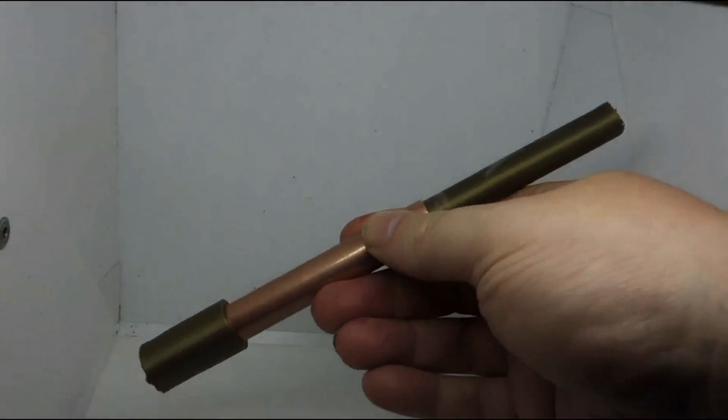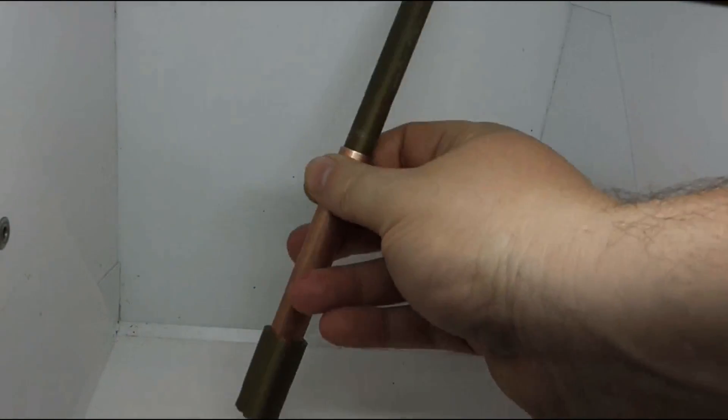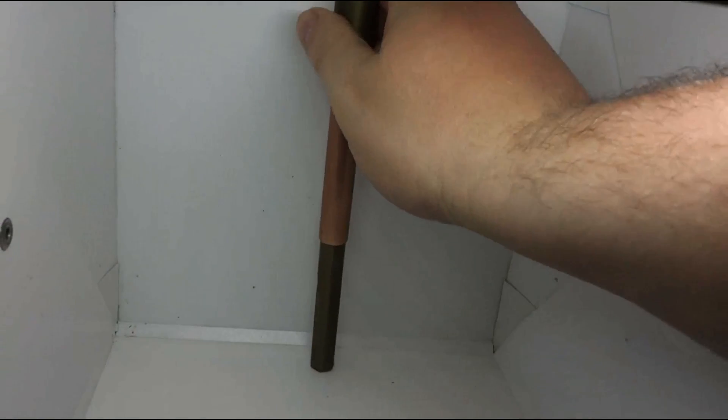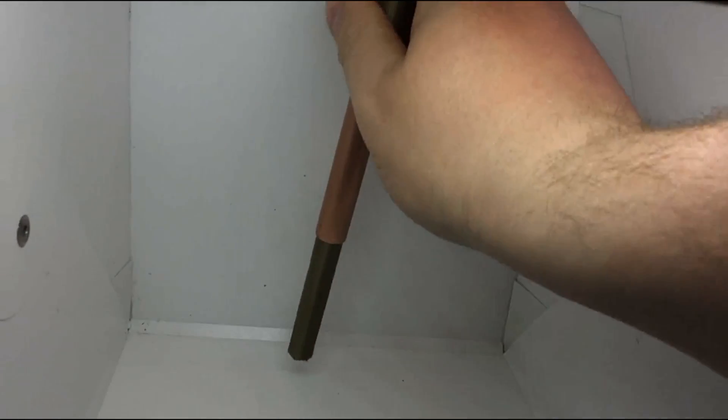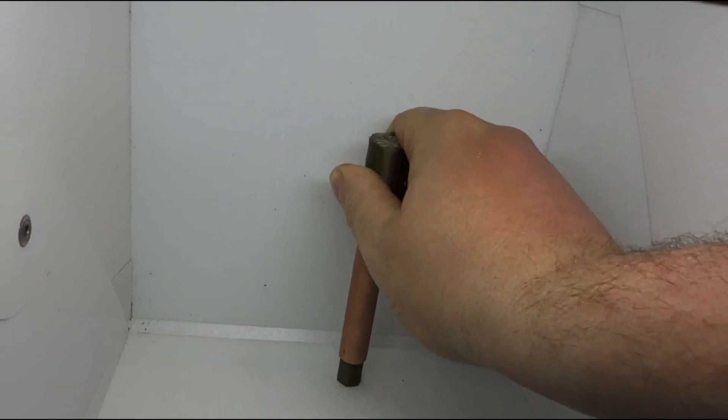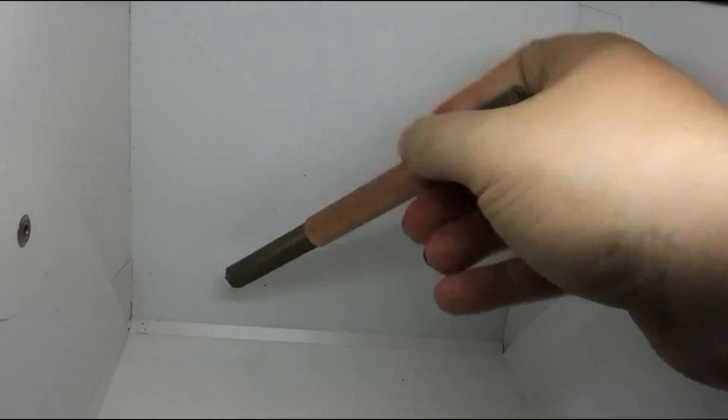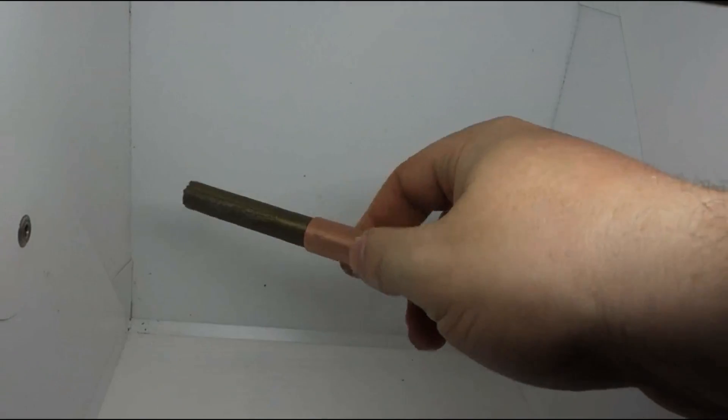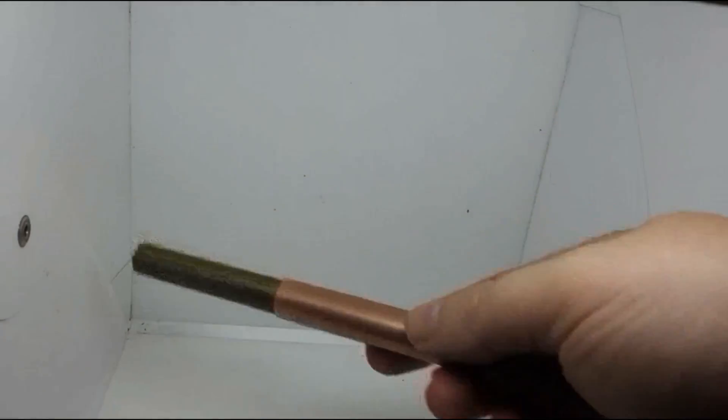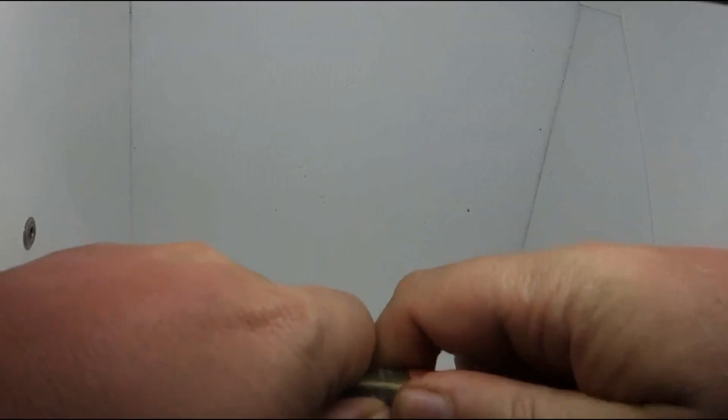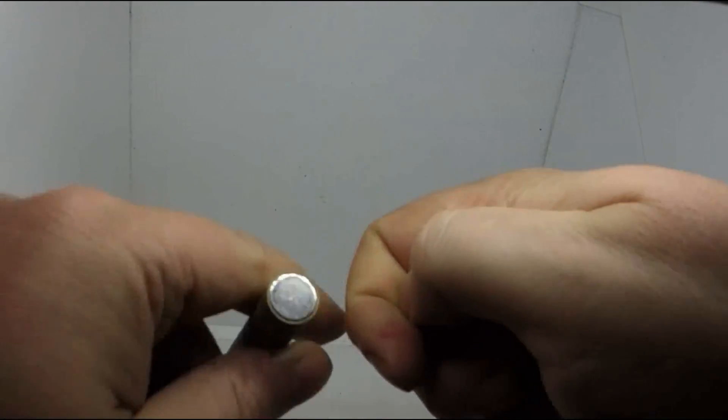So this is a very simple magnetic shock absorber. You can see the restitution here. The working principle is very simple: the magnets inside both act as the spring, and the copper jacket around the magnets acts as the dampening system.